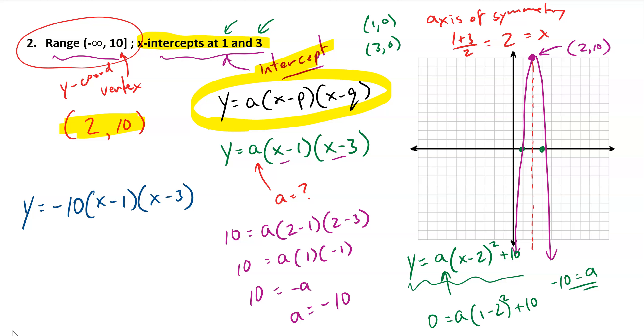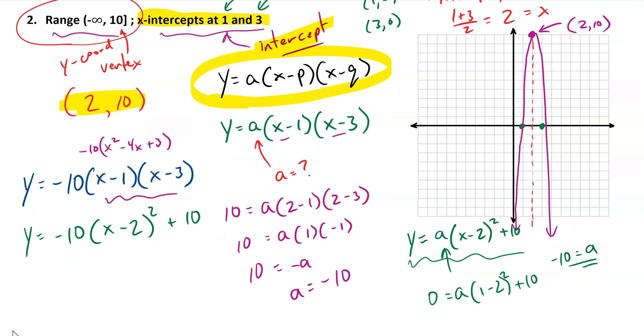We get the same a value for the vertex form: y equals -10(x minus 2) squared plus 10. And to check those, we could multiply both of those out, and we should get the same standard form. So if I multiply out this expression, I would get (x squared minus 4x plus 3), all of that times -10.